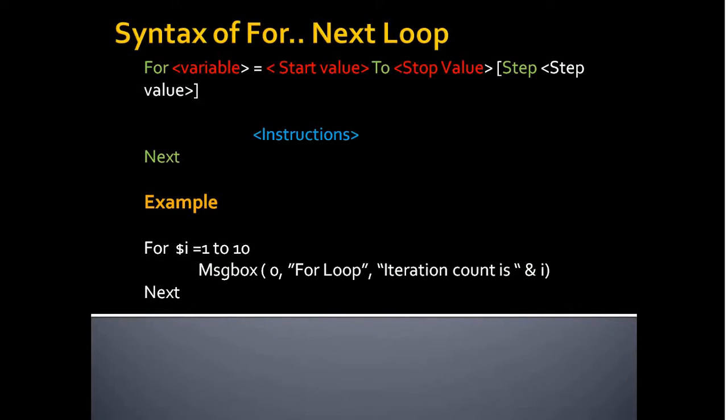Let's see the syntax of For Next loop. The syntax should begin with the keyword For followed by a variable. The variable can be anything, it can be dollar sign i or dollar sign j, but it should contain a variable followed by an assignment operator.